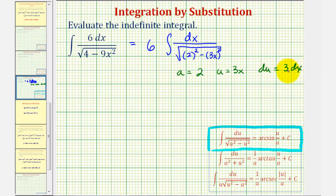Let's solve this for dx by dividing both sides by 3, so one-third du equals dx. Just to make sure we're clear: a equals 2, u equals 3x, and one-third du equals dx.